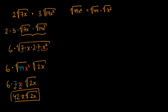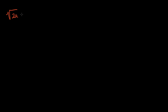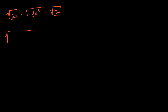Let's do another one. So let's say I have the square root of 2a times the square root of 14a to the third, times the square root of 5a. Pause this video and see if you can simplify this on your own — multiply them and then take all the perfect squares out of the radical. So let's multiply first. This is going to be the square root of 2 times 14 times 5. 2 and 5 are prime; 14 I can factor as 2 times 7. So this is going to be 2 times 2 times 7 times 5. And then we have a times a to the third times a — that's a to the fifth.